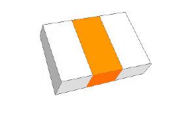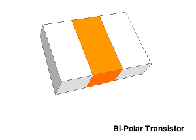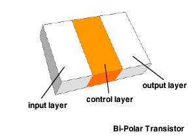There are many kinds of transistors. Typical is the bipolar, which has three layers: an input layer, a control layer, and an output layer.